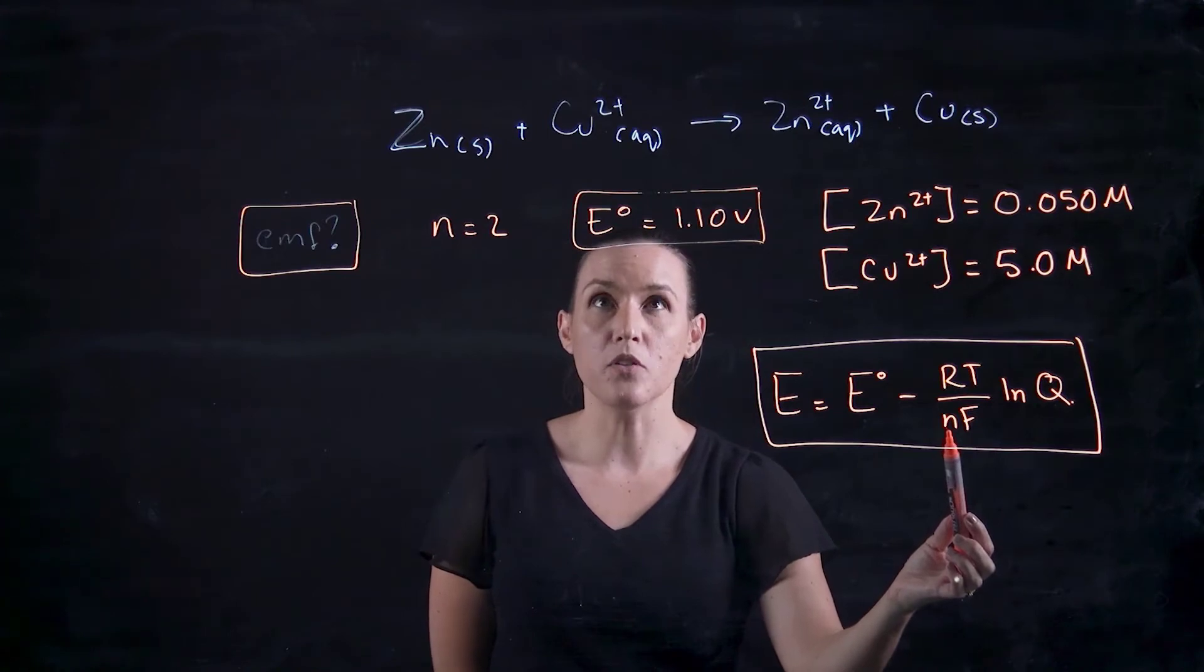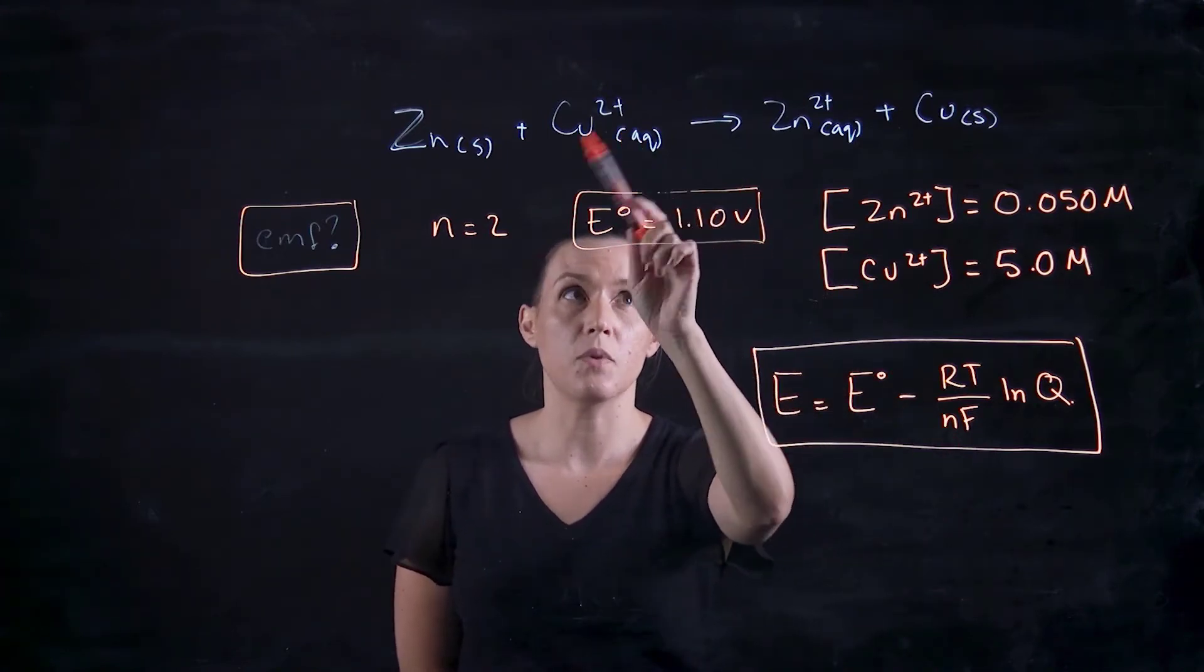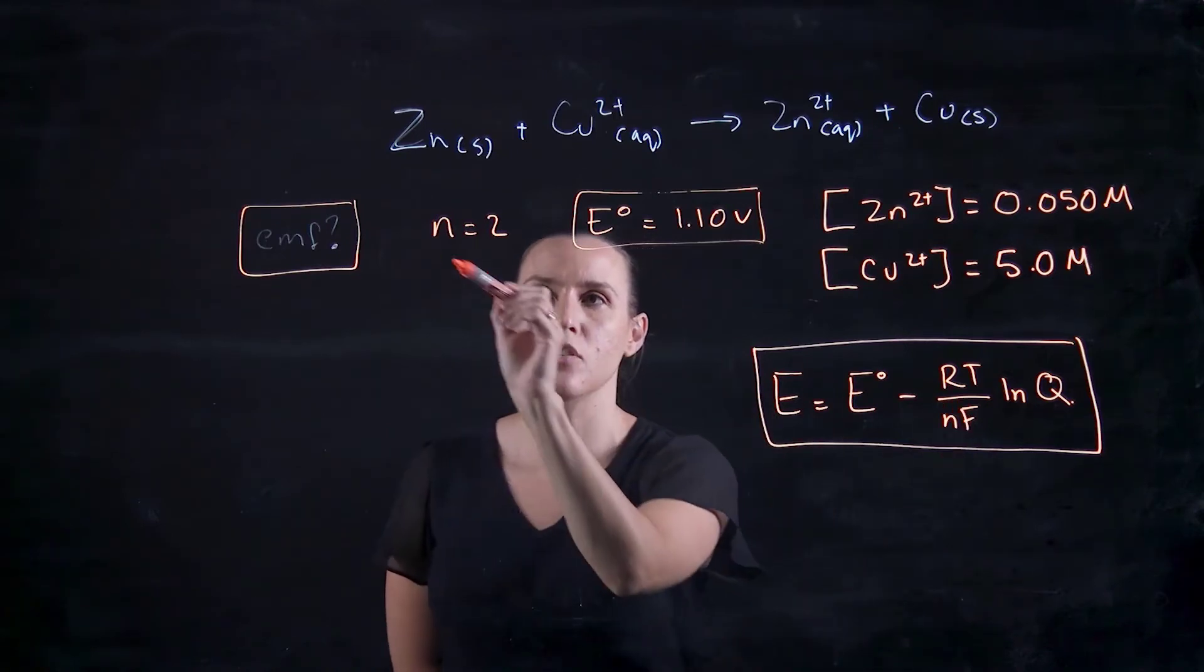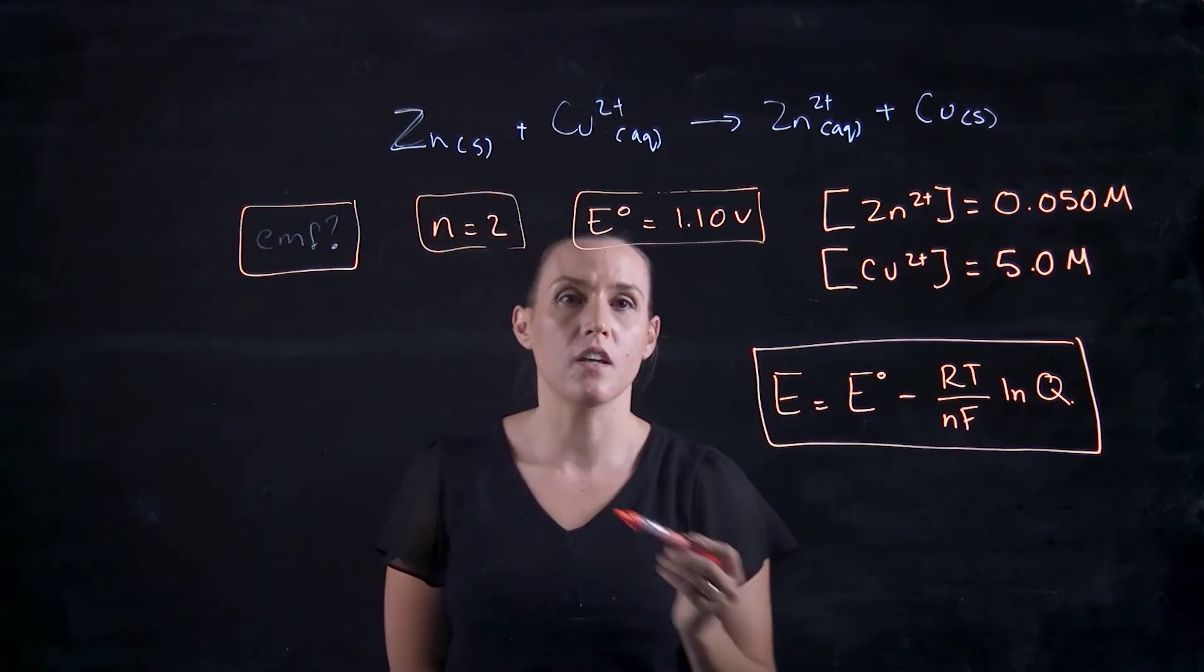N is the number of electrons being transferred. So in the zinc copper, we've got two electrons that are in the reaction.